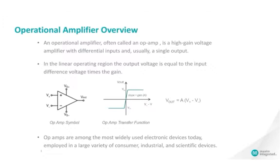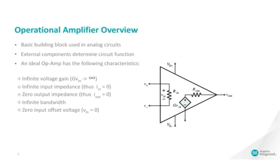In the linear operating region, the output voltage is equal to the input difference voltage times the gain. Op-amps are ubiquitous. They can be found in a large variety of devices from consumer to industrial and instrumentation applications. An op-amp can be used in many different ways and is a basic building block for analog circuits. The function of the circuit is determined by the op-amp configuration and the external components selected.